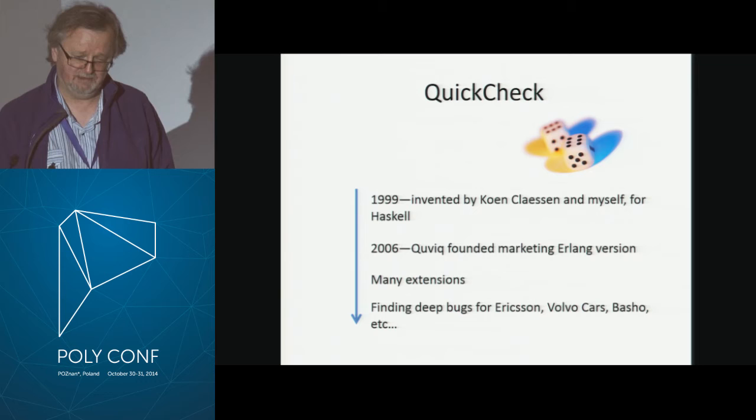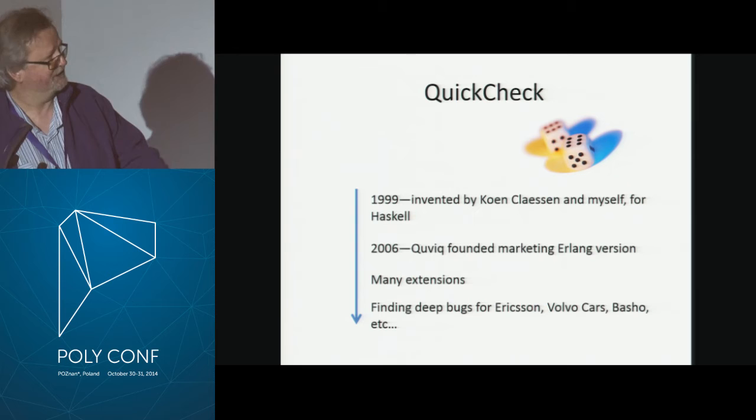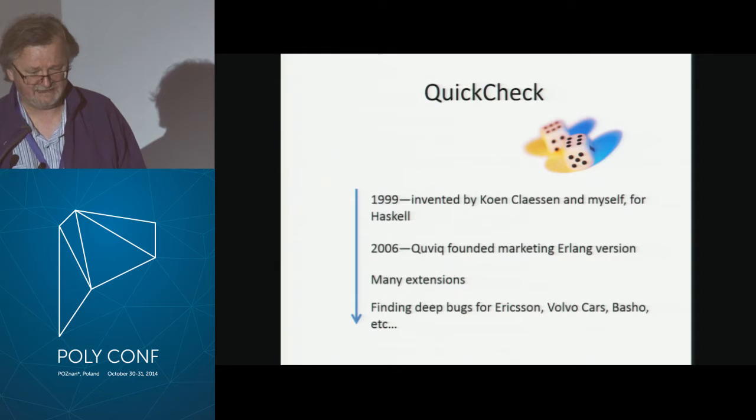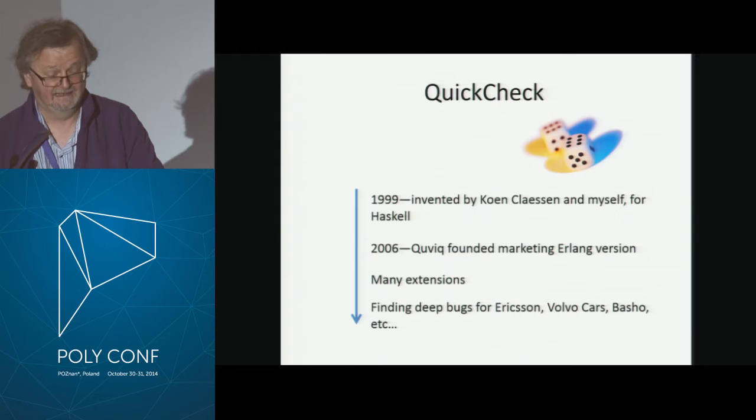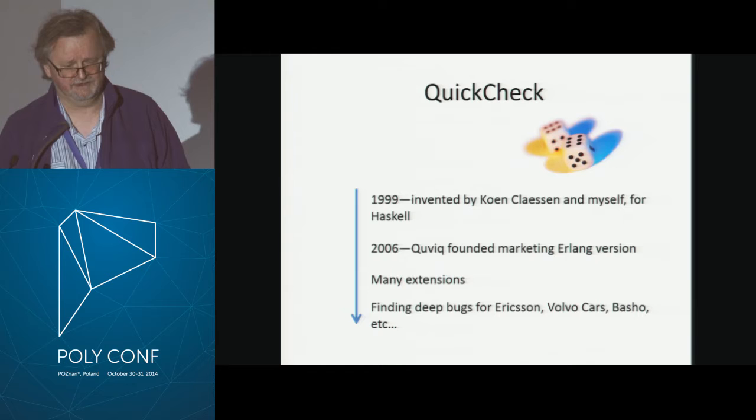Generate them. I'm going to talk about a test generation tool called QuickCheck that I've been working with for almost 15 years. Koen Claessen and I invented the first version back in 1999, and we wrote it in Haskell — you can play with that today. Since 2006, I've been working with an Erlang version, which is the one I'm going to show you today. We've had a whole lot of fun applying it to find deep bugs in all kinds of software.